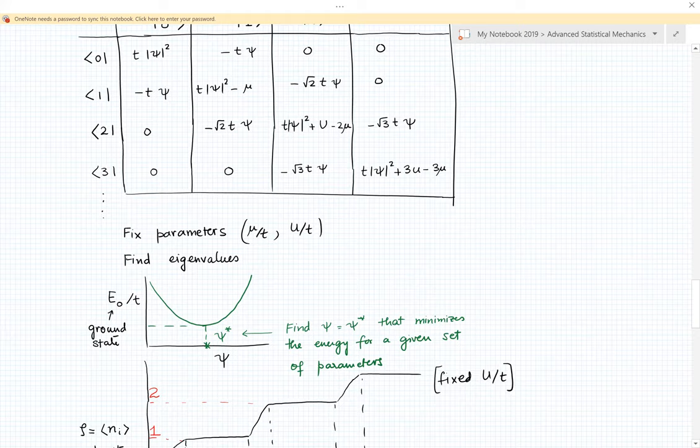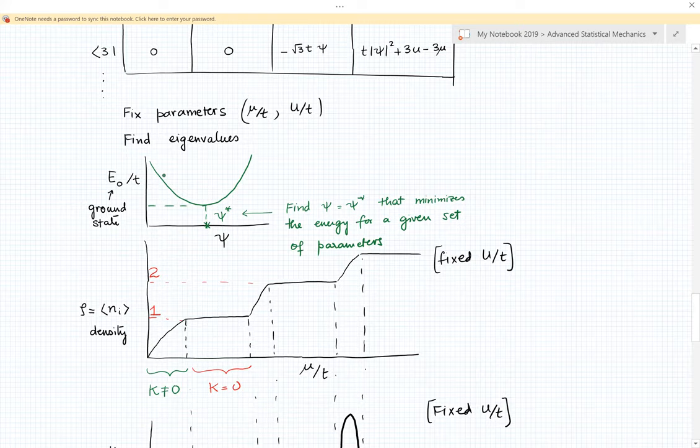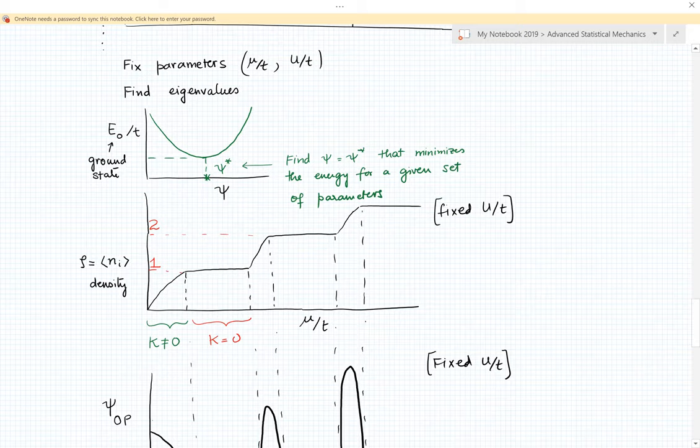Once you have the matrix form of this Hamiltonian, you can now fix particular values of mu over t and U over t and determine the eigenvalue. The eigenvalue is now a function of this unknown parameter psi, so you get a function E_0 as a function of psi. Essentially the order parameter for this set of parameter values in the Hamiltonian will be given by that value of psi star that minimizes the ground state energy. With that psi star we also have the eigenfunction.